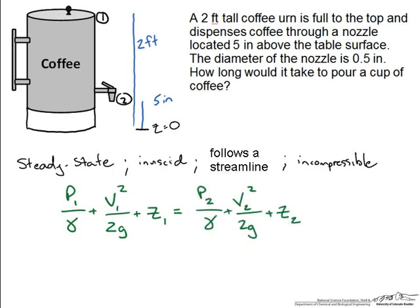Now that we have our generalized form of the equation we can start crossing some of the terms out. We are going to assume that this little thing on top makes it so that it is open to atmosphere. We know that the flow comes out open to atmosphere. So we can cross out our pressure one and pressure two terms and assume that it is just the same pressure as atmosphere.